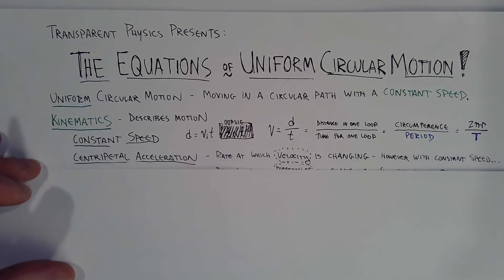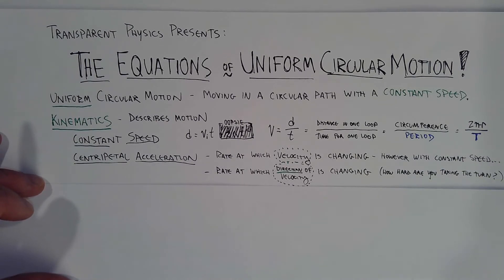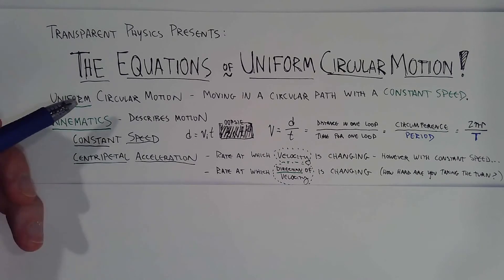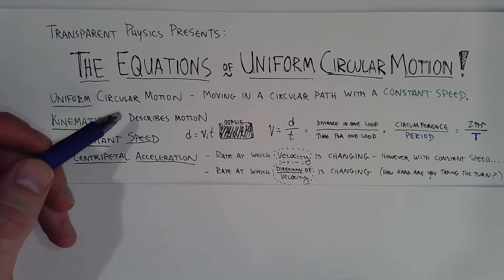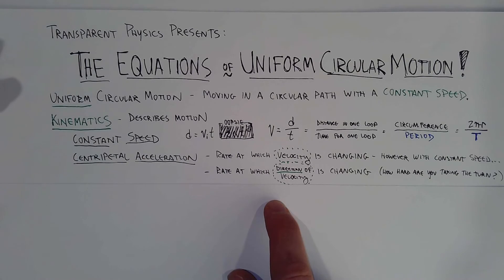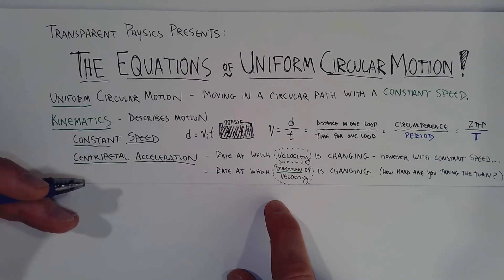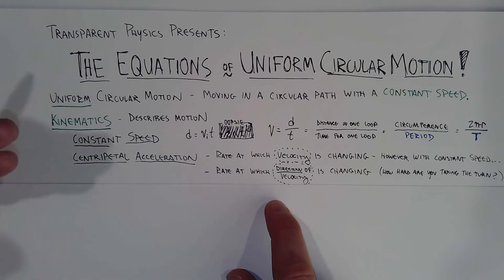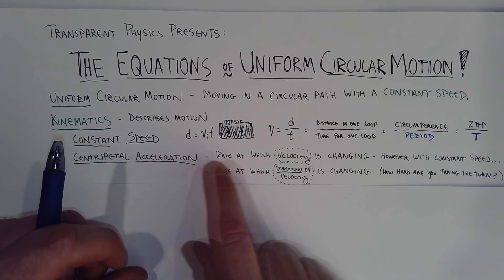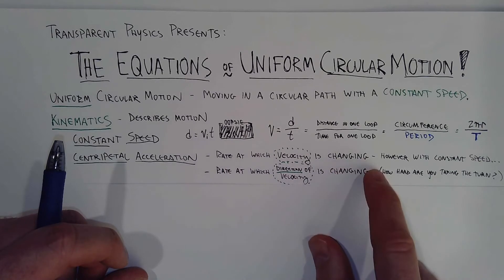The next equation we can take a look at involves centripetal acceleration. Now, centripetal acceleration is, I think, conceptually a little harder for circular motion. When we are talking about a linear acceleration, when we're talking about a change in speed, acceleration is meters per second per second. Plus 2 meters per second per second, plus 2 meters per second squared, tells you the rate at which the speed is changing in the context of the object speeding up or slowing down. So the general definition for acceleration is the rate at which velocity is changing.